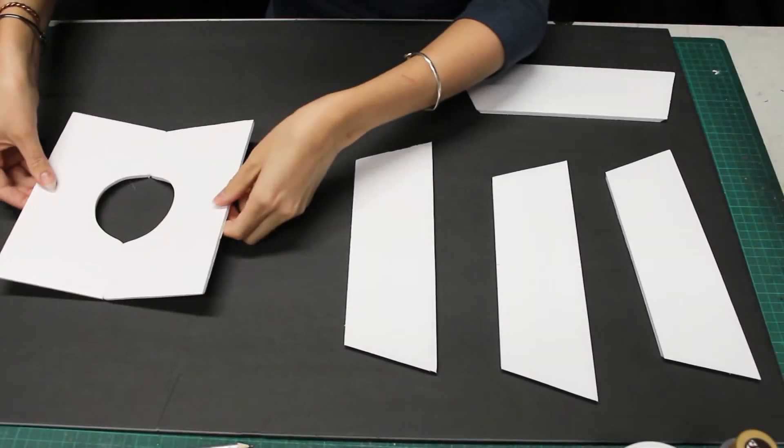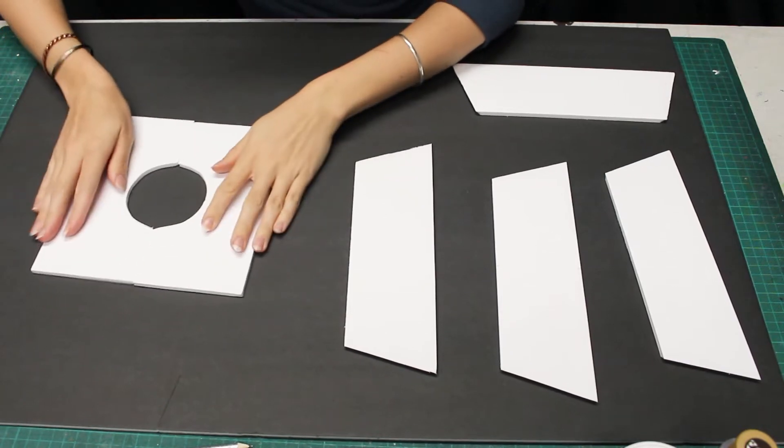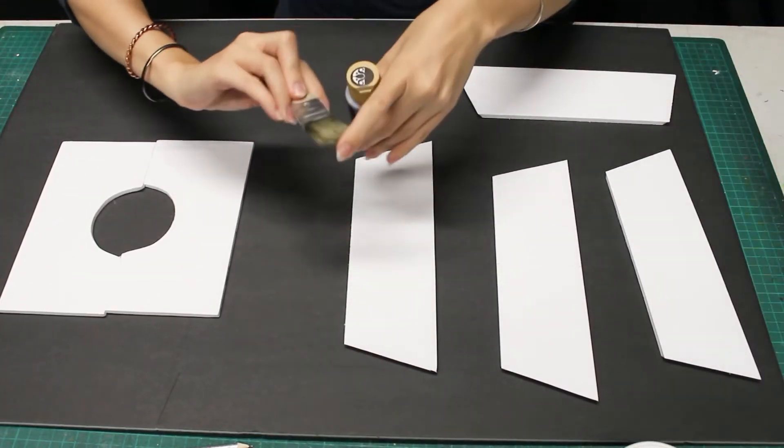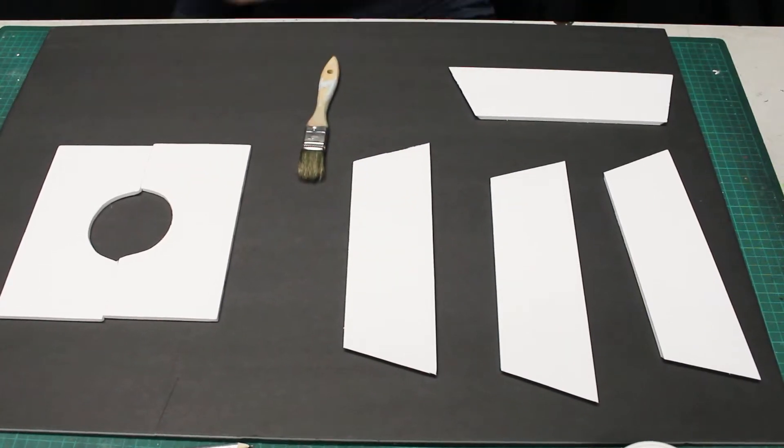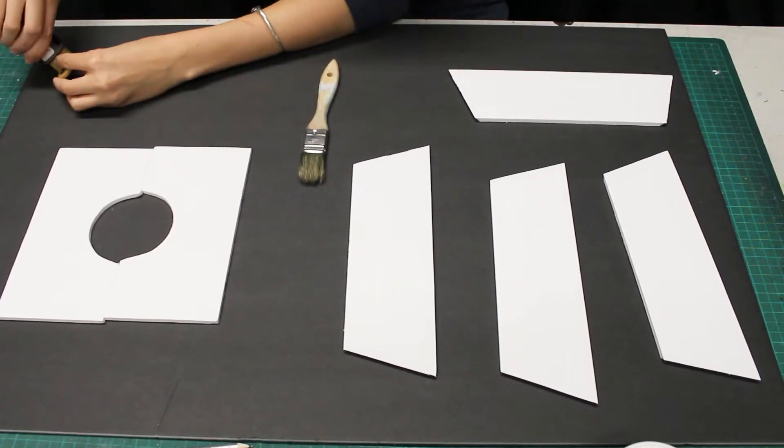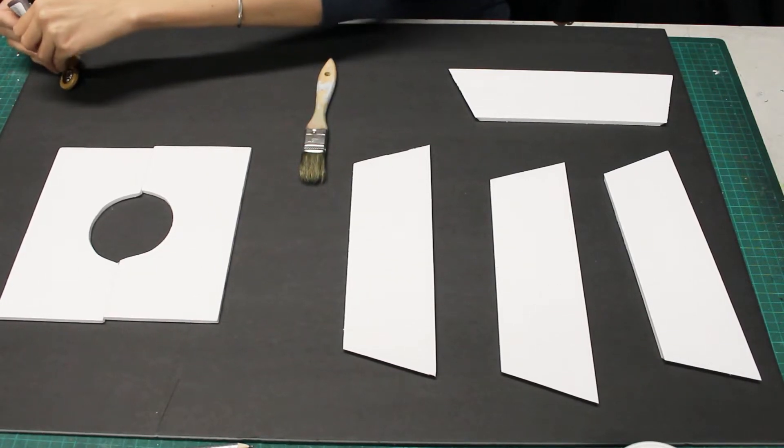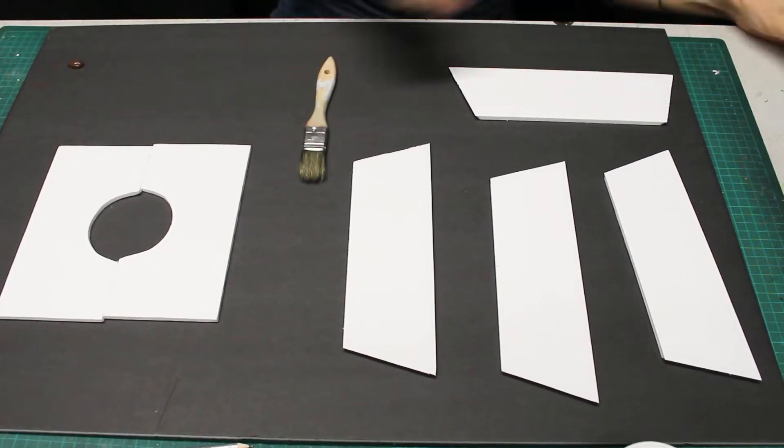Now that all the pieces of the stand are cut and ready, we can begin painting. I'm going to start with a coarse paintbrush and a dark brown acrylic paint. I'm going to use the paintbrush to add some base lines. I'm not going to go into too much detail on how I got this wood look. Instead, I'll post a couple links to some great tutorials.